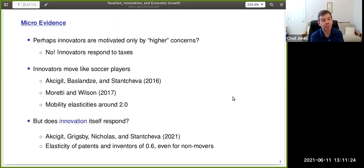So that brings us to the micro level evidence. There's sort of a stylized view that perhaps innovators are motivated only by higher concerns. We innovate because we like to create ideas and maybe innovators aren't concerned with things as mundane as economics or taxes. And I think the micro evidence that Ufuk Aksajit, Salome Bisande, Stephanie Stancheva, Moretti Wilson, Grigsby and Nicholas as well, the micro evidence that's been emerging suggests, no, innovators are highly responsive, maybe surprisingly responsive to taxes.